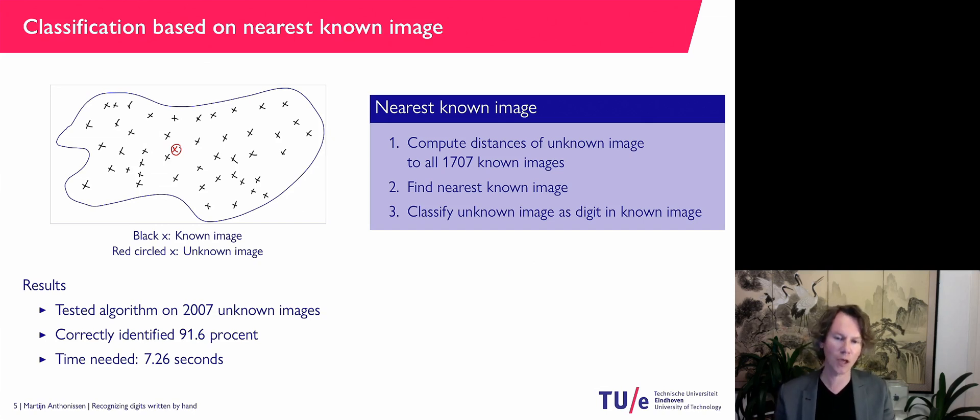So I let the algorithm decide. I compare that to what we have done ourselves. And then we check how many are identified correctly. And as you see, that's pretty good. 91%, that is pretty good.